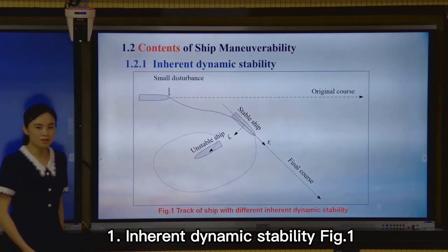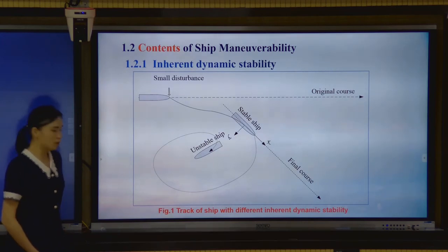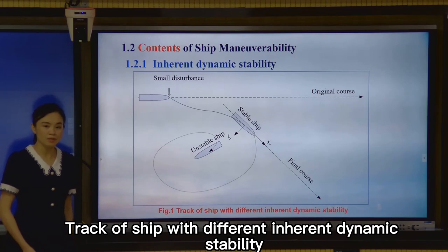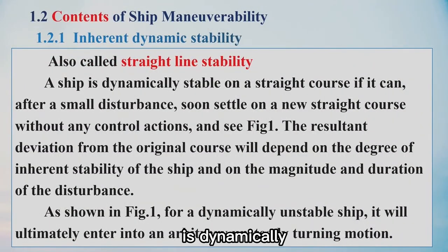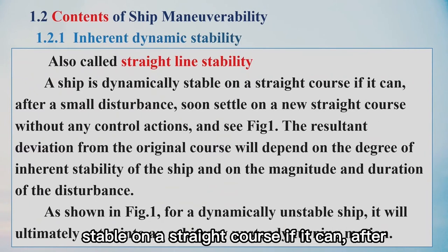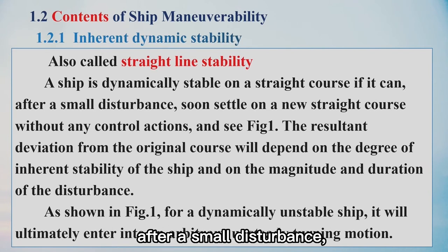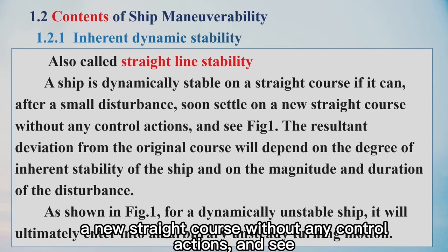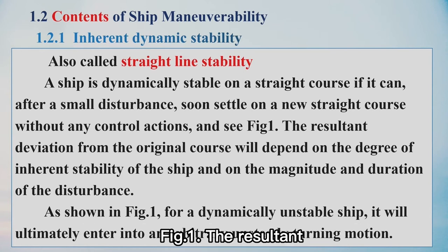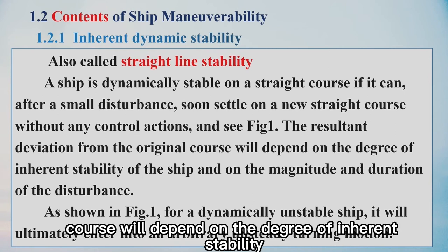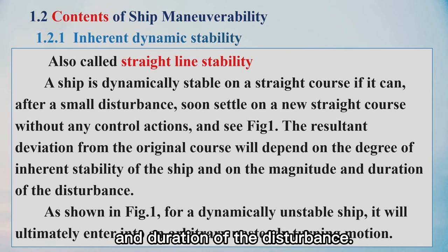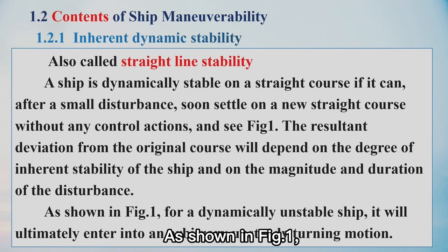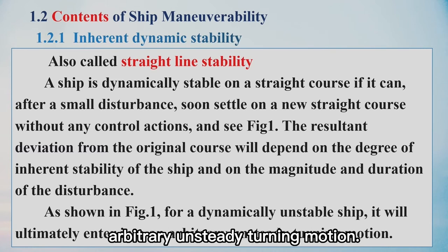Number one: inherent dynamic stability, also called straight-line stability. A ship is dynamically stable on a straight course if it can, after a small disturbance, soon settle on a new straight course without any control action. The resulting deviation from the original course will depend on the degree of inherent stability of the ship and on the magnitude and duration of the disturbance. For a dynamically unstable ship, it will ultimately enter into an arbitrary and steady turning motion.